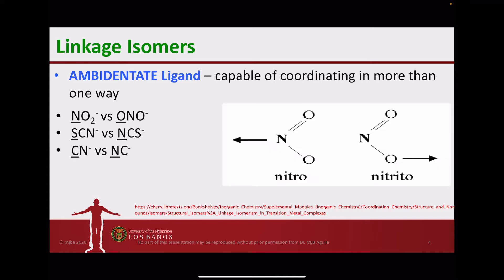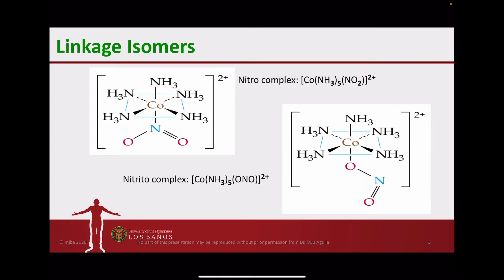An example is illustrated here. For one arrangement wherein the nitrite ion is bonded to the metal through nitrogen, this is referred to as the nitro complex, whereas one arrangement wherein one of the oxygens is connected to the metal is traditionally referred to as the nitrito complex. An example of nitro and nitrito complexes would be a cobalt octahedral complex with five ammonia molecules bonded to it, but the nitrite ion is arranged differently — for the nitro complex it is bonded through nitrogen, and for the nitrito complex it is bonded through oxygen.